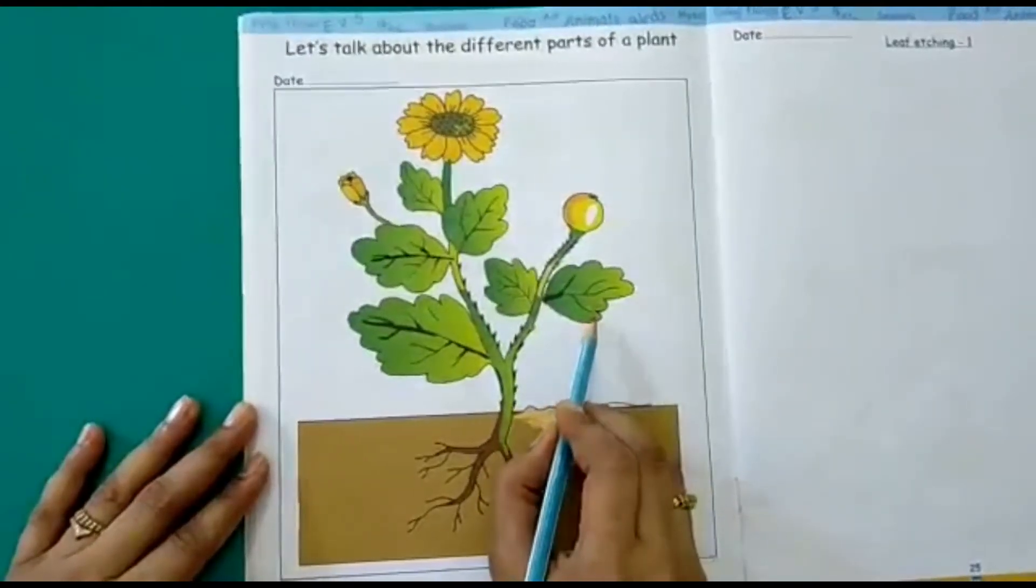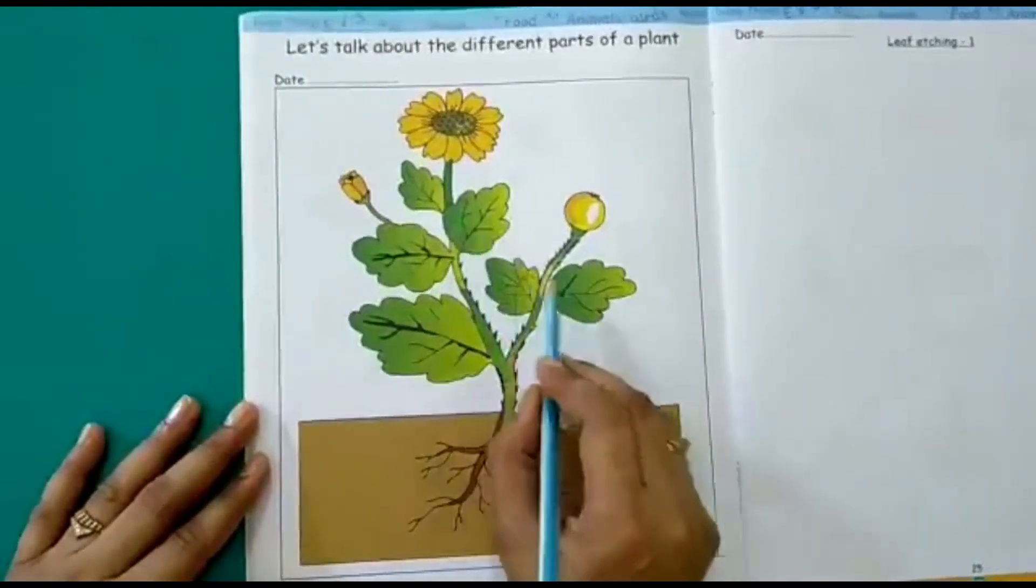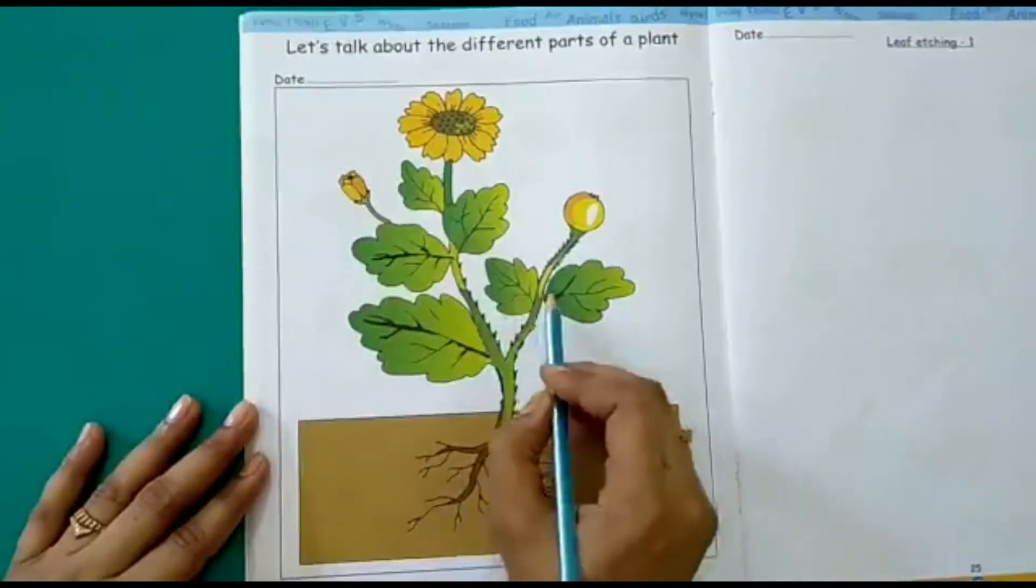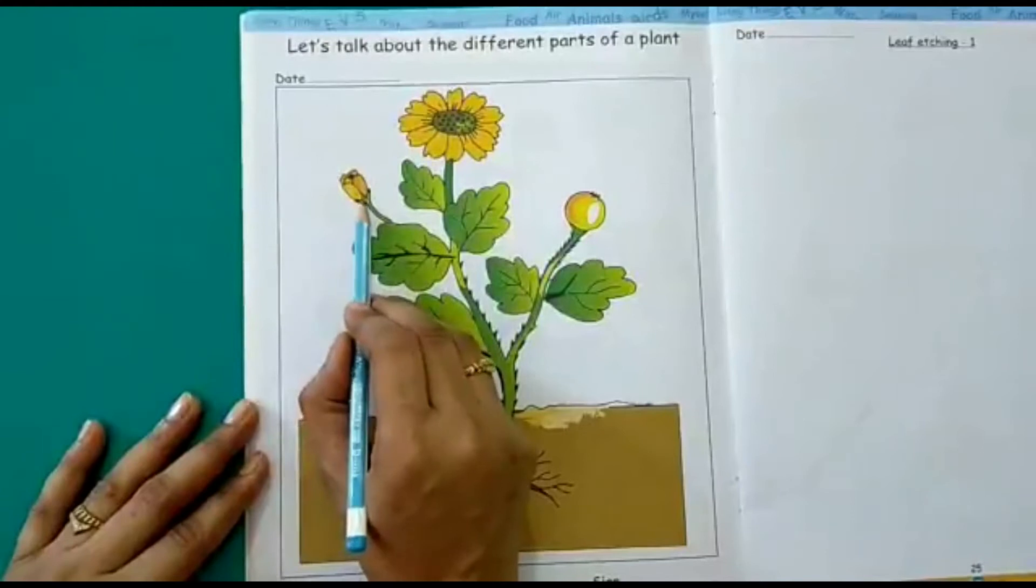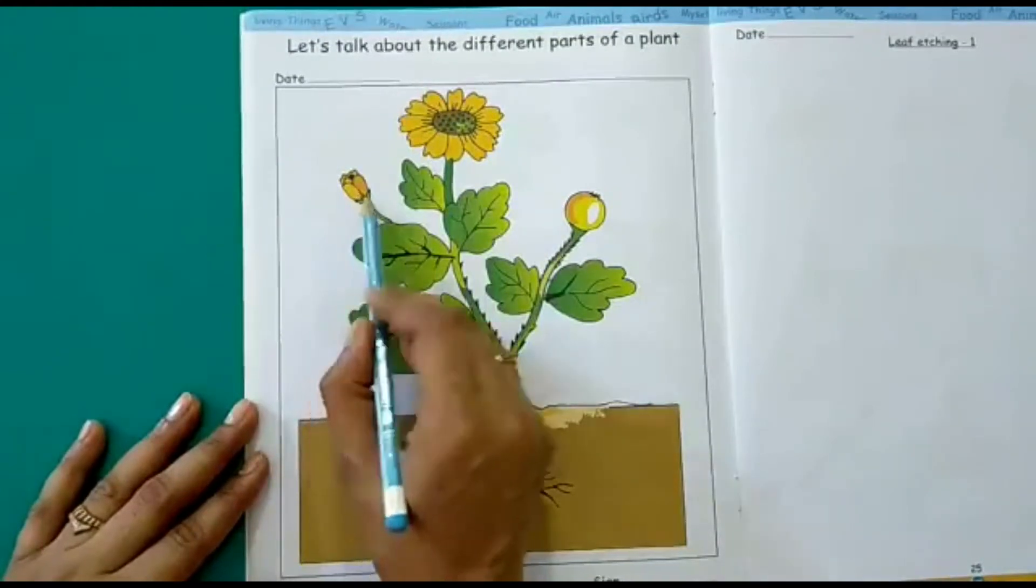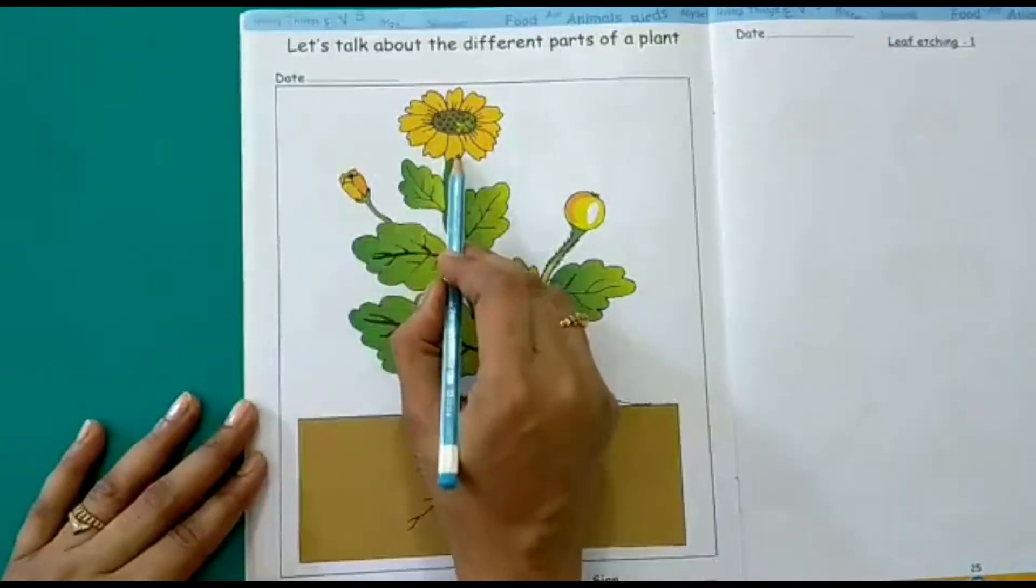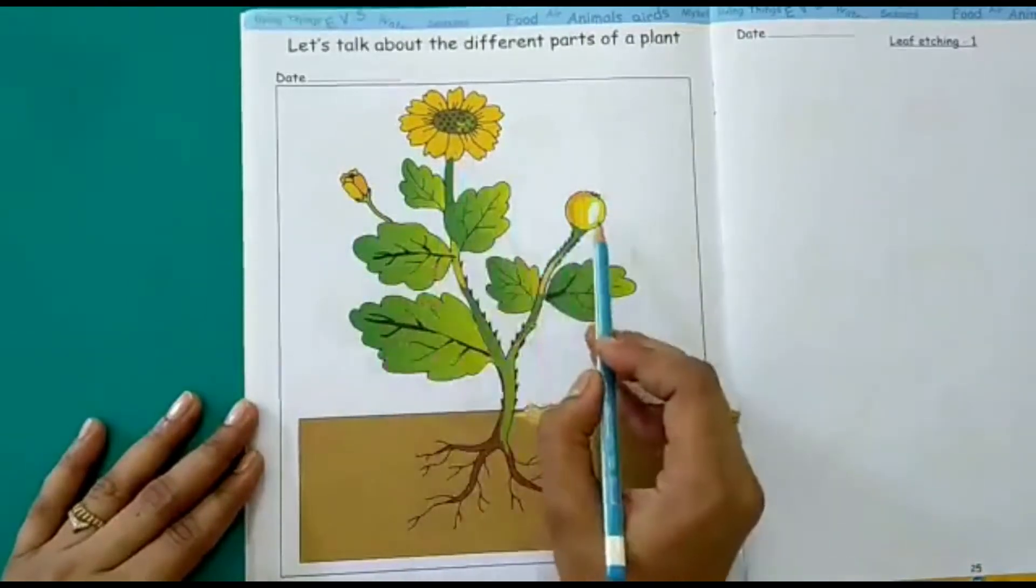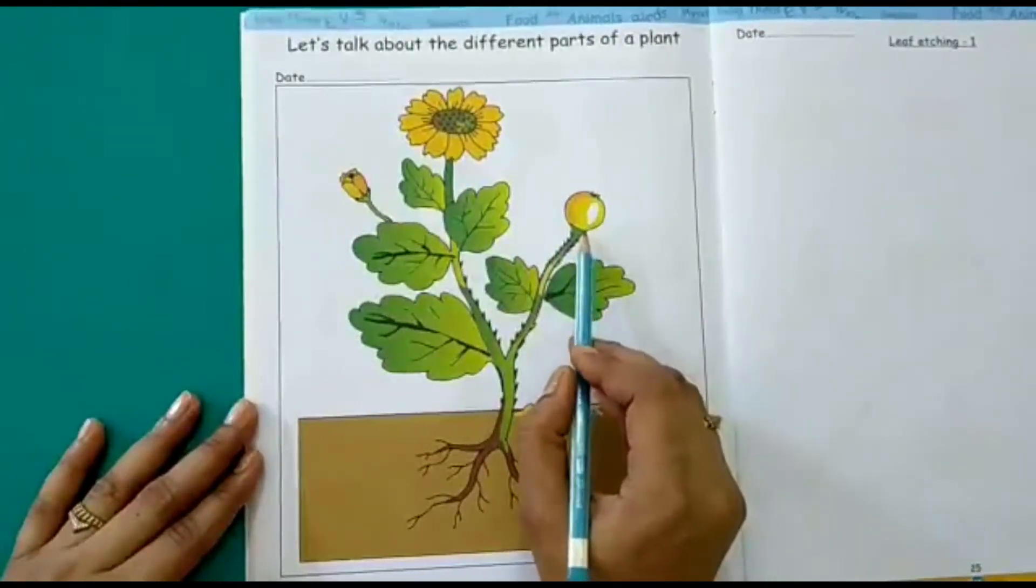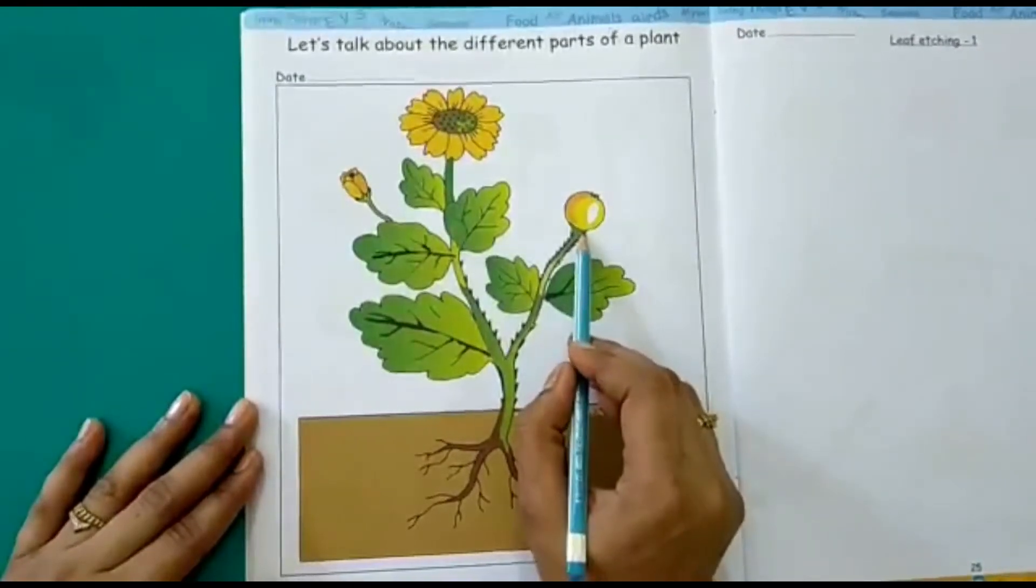And what do we have here? These are leaves. These are the leaves of the plant. Then we have a bud. When this blooms what do we get? We get a flower. This bud blooms into a flower. And here we have a fruit. This is the fruit of the plant.